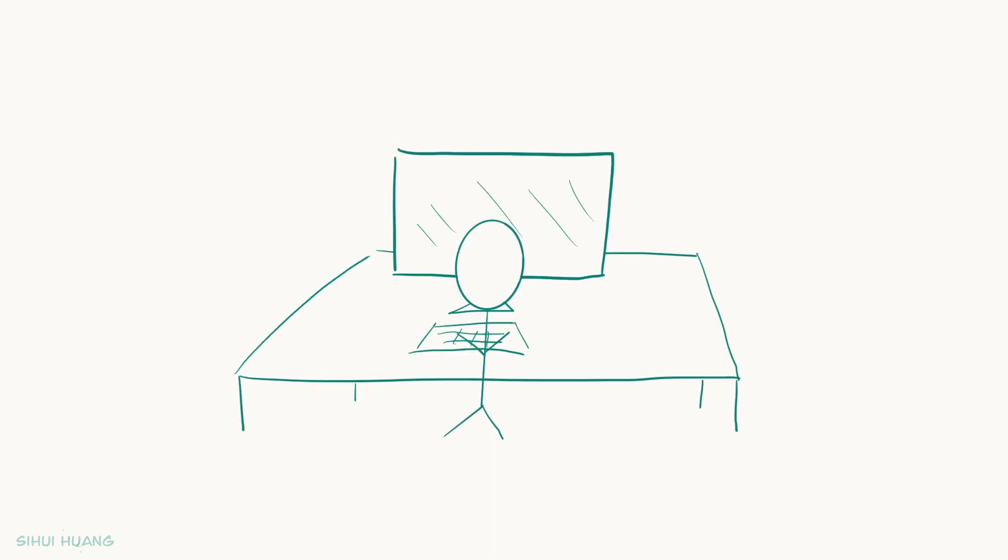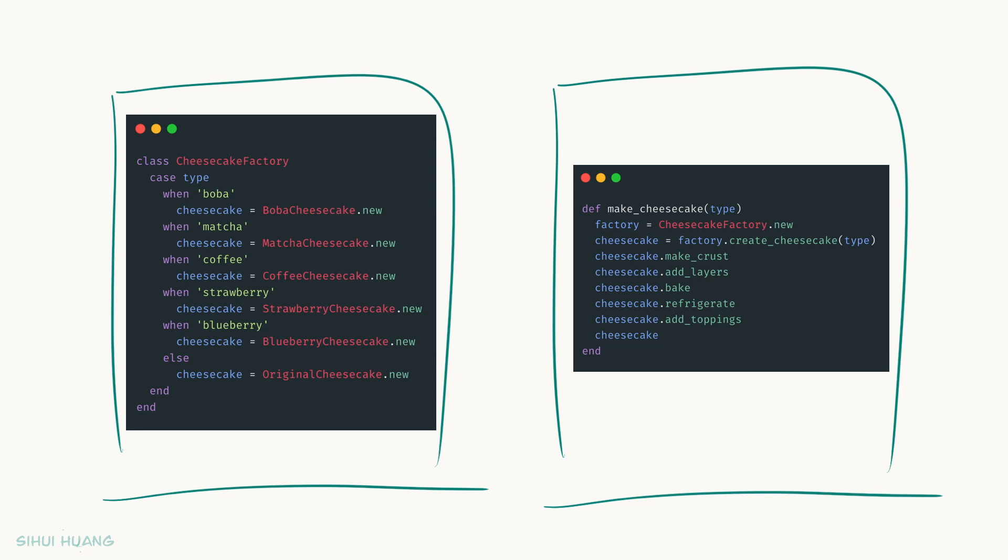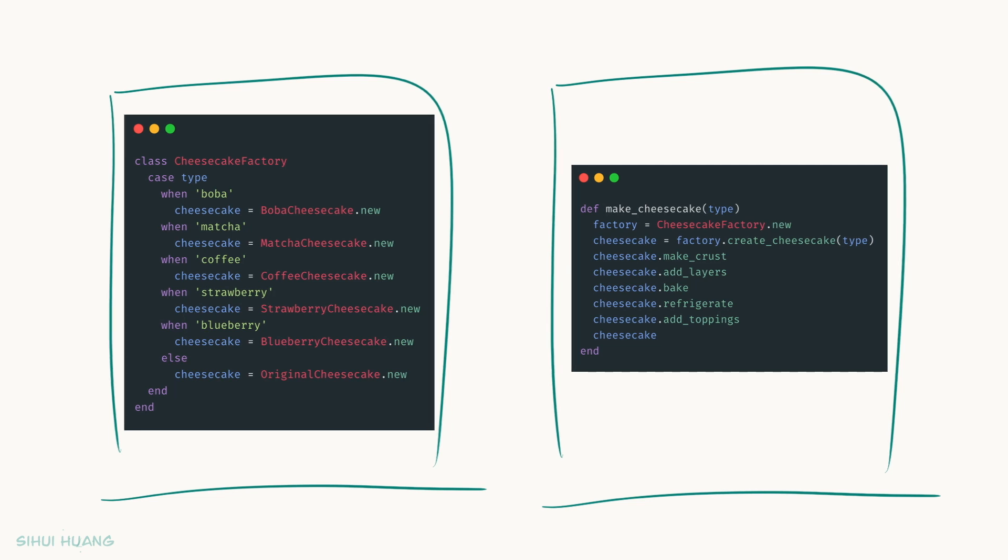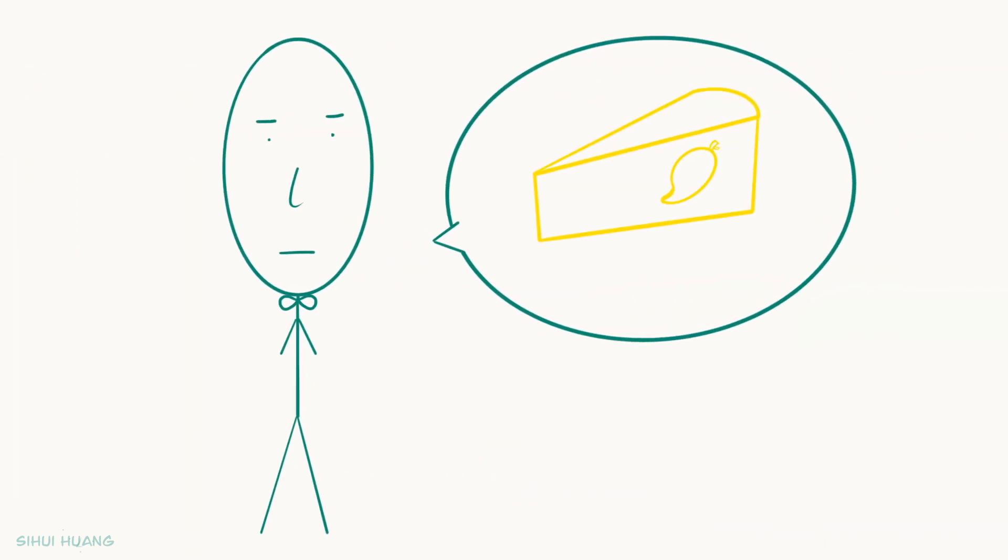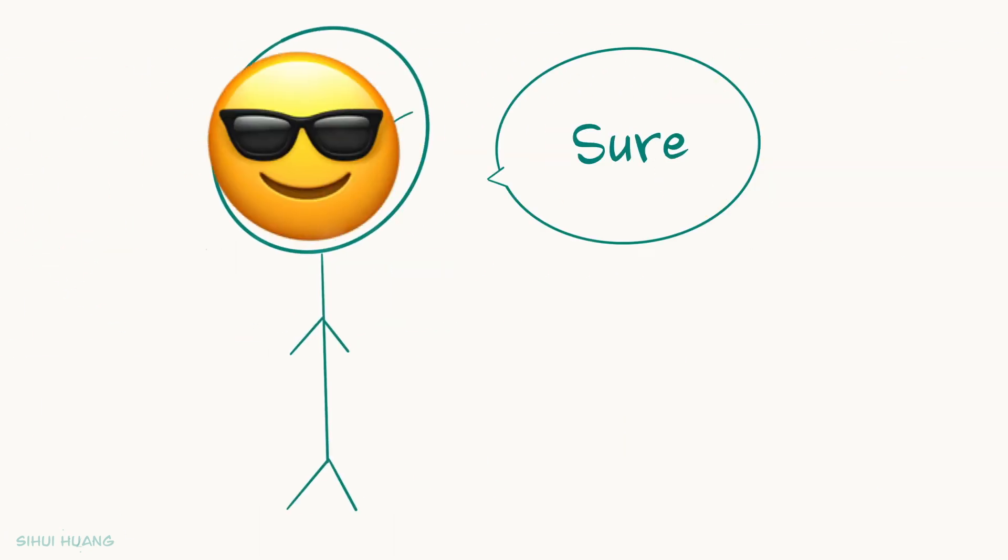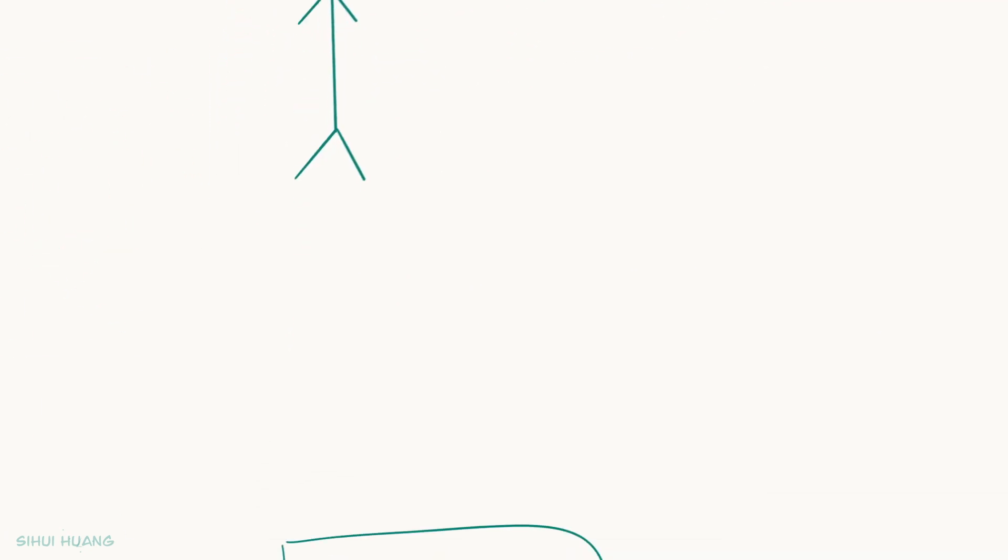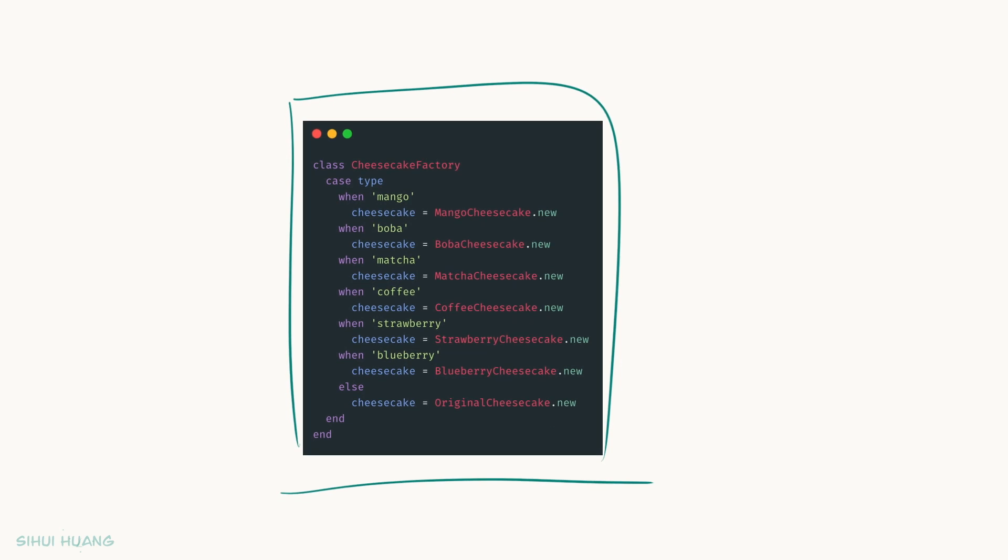So next morning, as soon as he gets to the office, he updates the code to move out the case statement and encapsulates it as the Cheesecake Factory class. Right after that, Kevin comes with a new idea: Mango Cheesecake. Sure thing, Jeff says with confidence. And all he needs to do now is to update the Cheesecake Factory class to handle the Mango Cheesecake. And now everyone is happy.